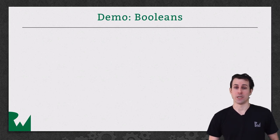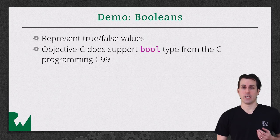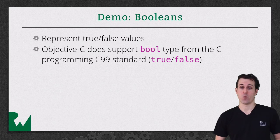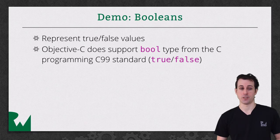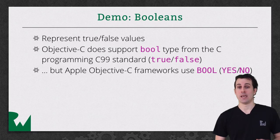Booleans are the values you use to represent true and false values. Objective-C is built on top of C, so there's a data type in C for this. It's lowercase bool, and it has two and only two possible values: true and false. But it's recommended in Objective-C to use Apple's data type instead. They have their own data type called capital BOOL, and they have their own true and false values called capital YES and capital NO.